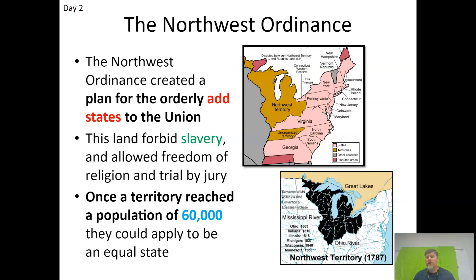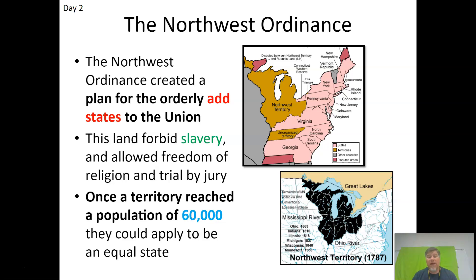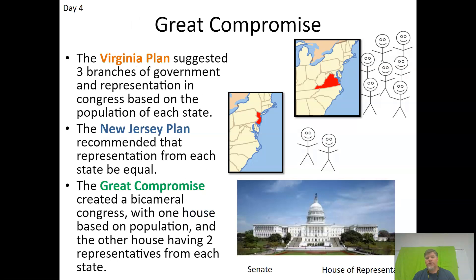The one good thing that came out of the Articles of Confederation is the Northwest Ordinance, and this is often on your test. The Northwest Ordinance provides an orderly way to add new states, and it says these new states will be equal to the original 13 states — they won't come in with less power. You could not apply for statehood until you had at least 60,000 people.